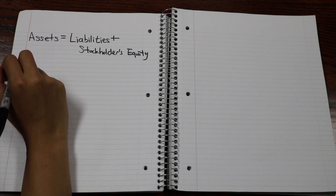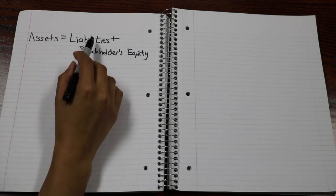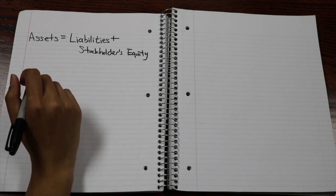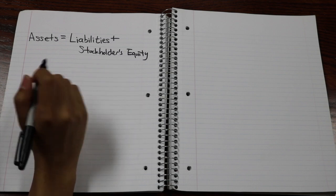The accounting equation is simple. It's assets equals liability plus stockholders' equity, which is also known as shareholders' equity or owners' equity. But what does this mean?